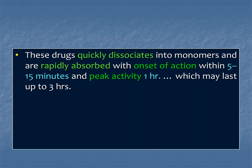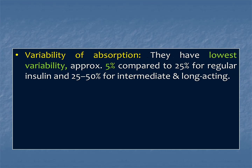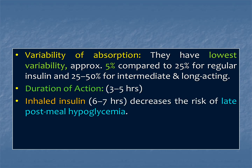They quickly dissociate into monomers and are rapidly absorbed. Onset is within 5 to 15 minutes and peak activity is achieved within 1 hour, lasting up to 3 hours. Variability of absorption is lowest — approximately 5% — compared to 25% for regular insulin and up to 50% for intermediate and long-acting insulin. Duration of action is up to 3 to 5 hours. Inhaled insulin may have a prolonged duration of 6 to 7 hours, decreasing the risk of late post-meal hypoglycemia.